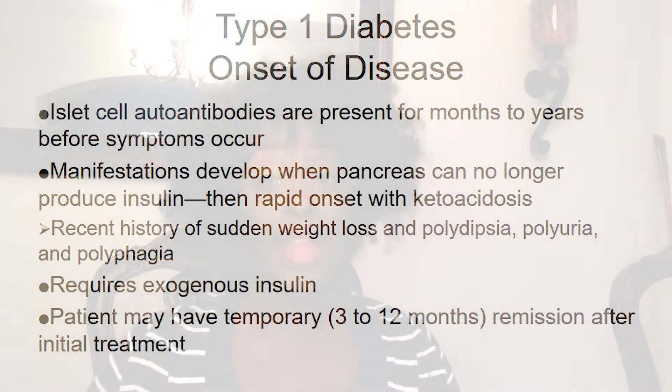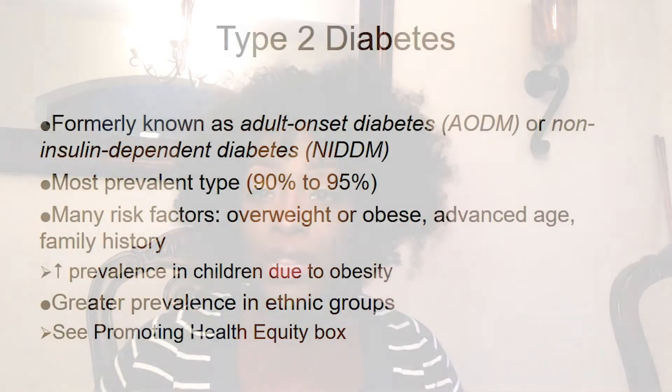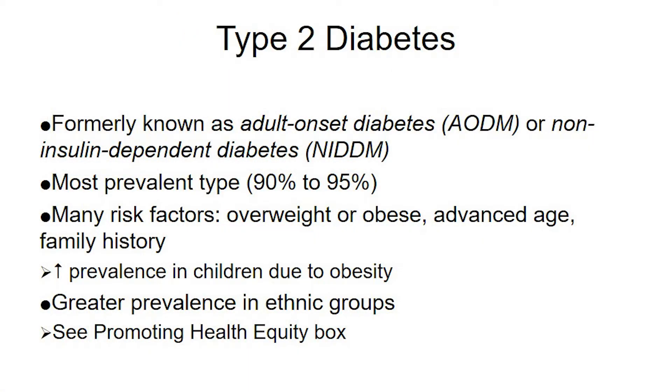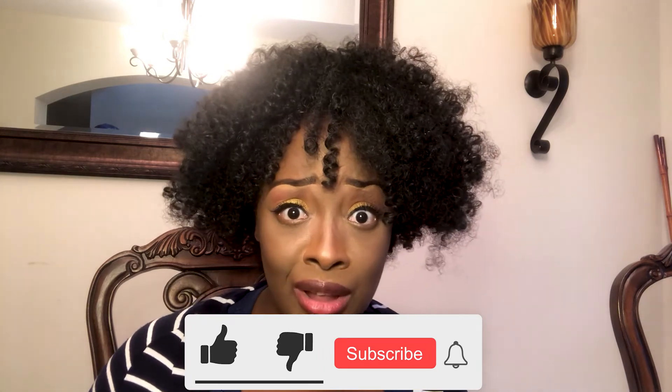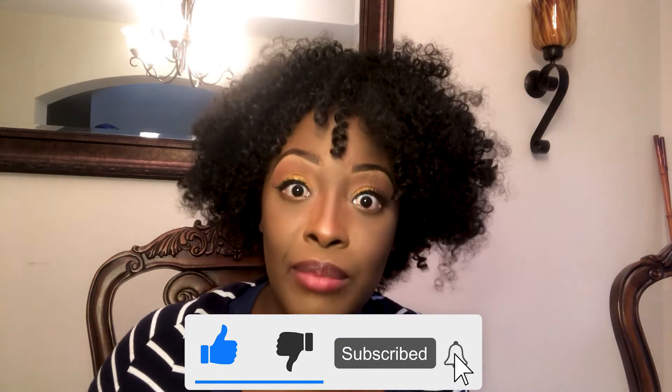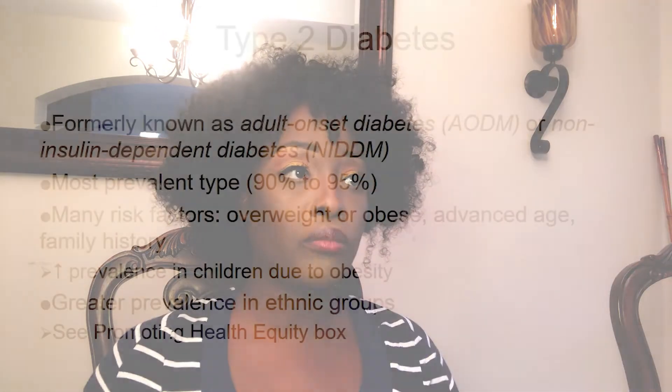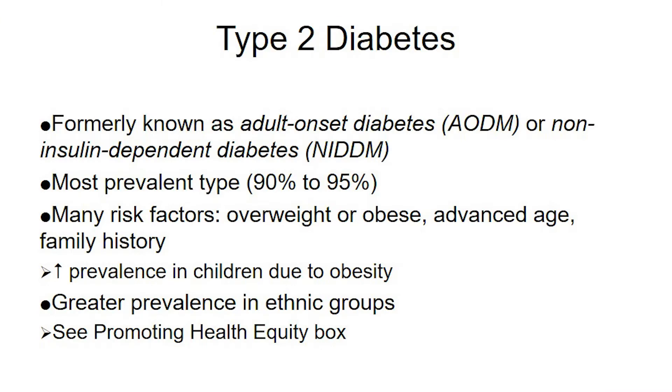Now let's talk about Type 2, formerly known as adult onset diabetes or non-insulin dependent diabetes. Our Type 1s are insulin dependent — without insulin they will die. But Type 2s don't have to be dependent on insulin. In fact, if they start exercising and eating right, 95 to 98% of the time the hemoglobin A1C goes down and they're no longer diabetic. That's why Type 2 is also called non-insulin dependent — and it's the most prevalent type, accounting for 90 to 95% of all diabetics.